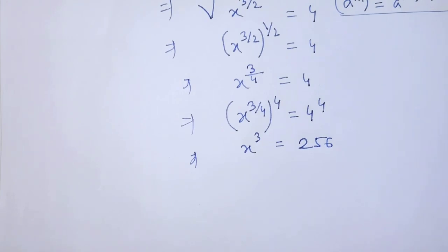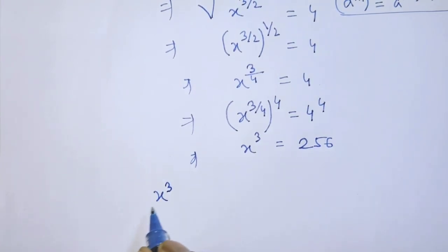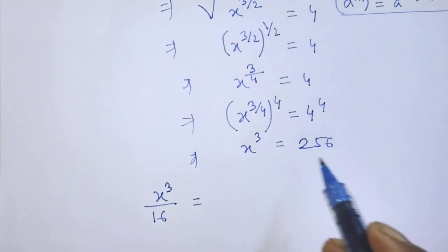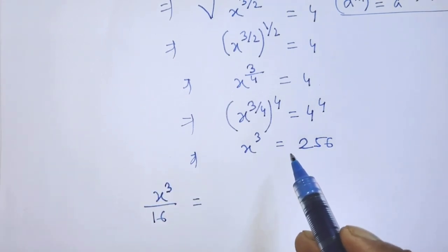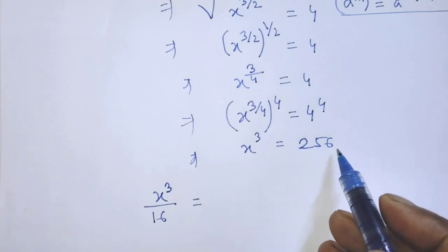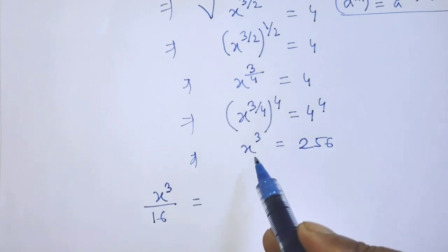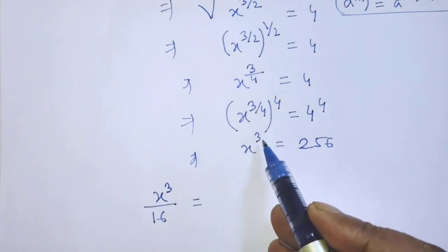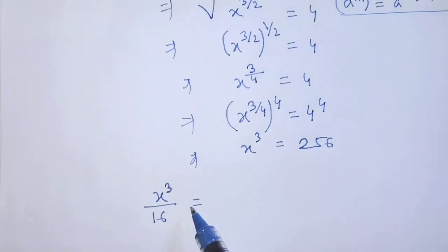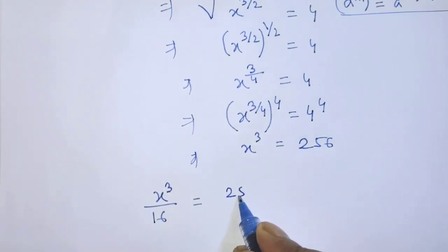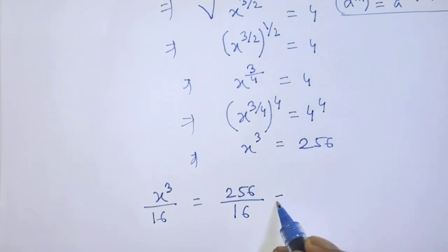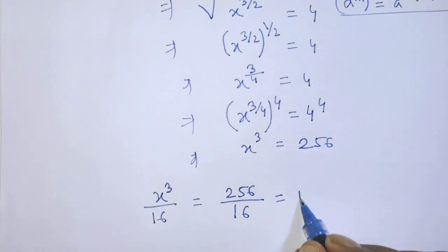We have to find the value of x to the power 3 over 16. The value of x to the power 3 is 256. So we put the value of x to the power 3 in this exponential form. Then it will be 256 over 16.